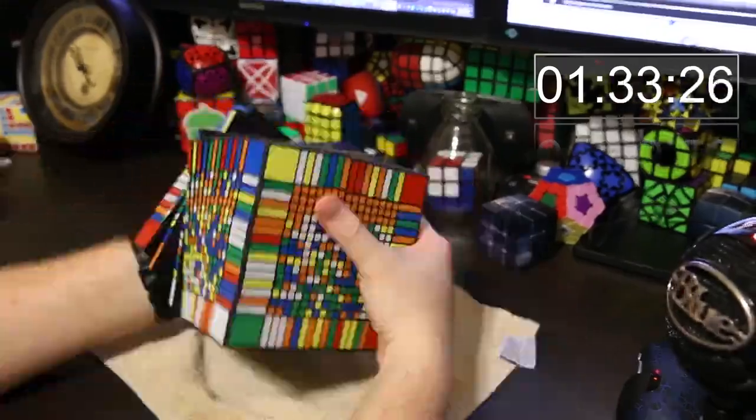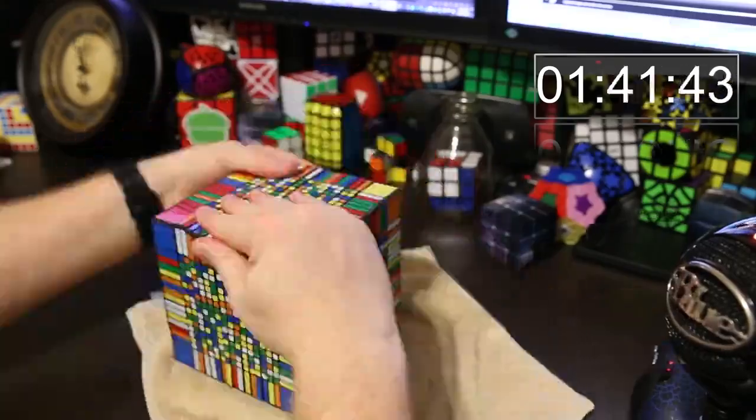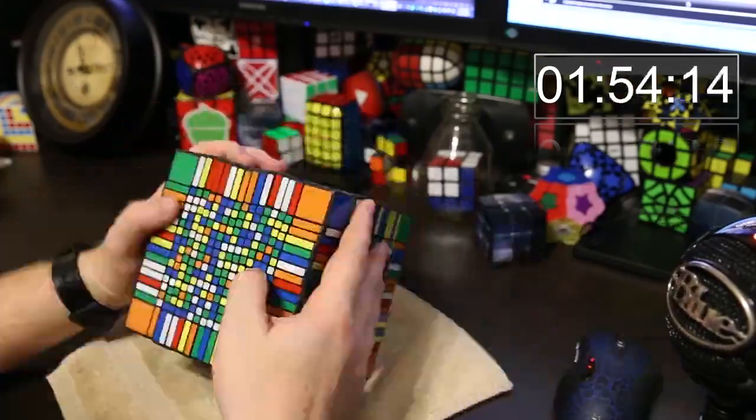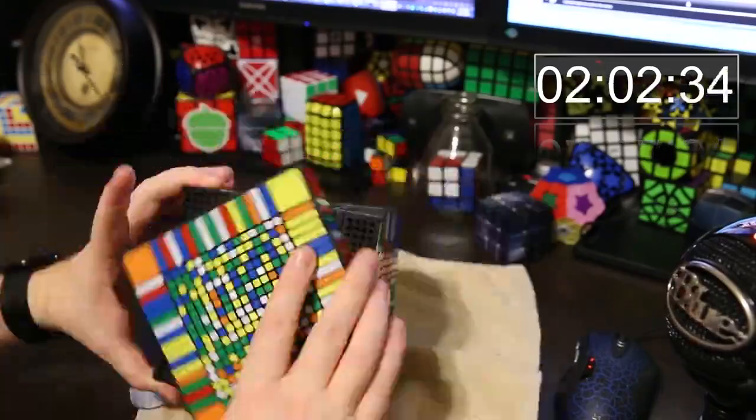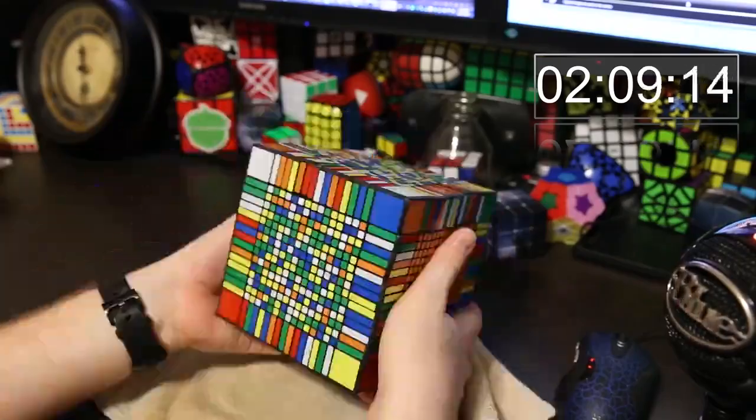So first, I'm reducing the centers so that every center is fully solved, and then I reduce the edges, so the edge pieces are all solved, and then it's like a big Rubik's cube with huge centers, long skinny edges, and tiny corners, although the corners are pretty big compared to the other pieces.